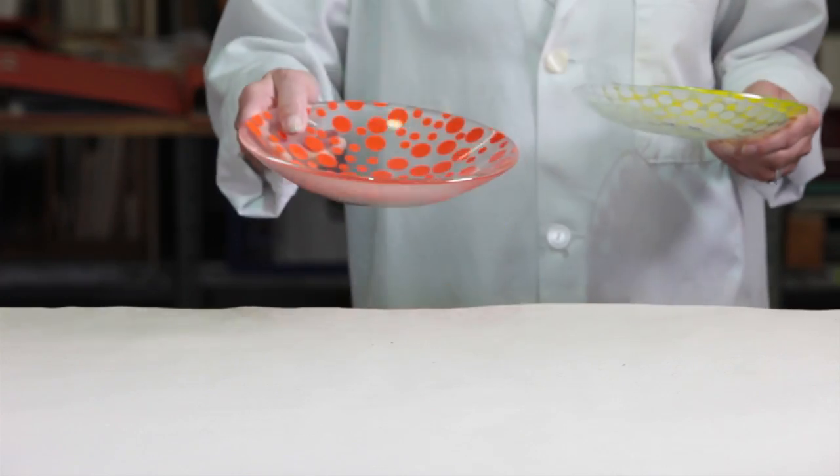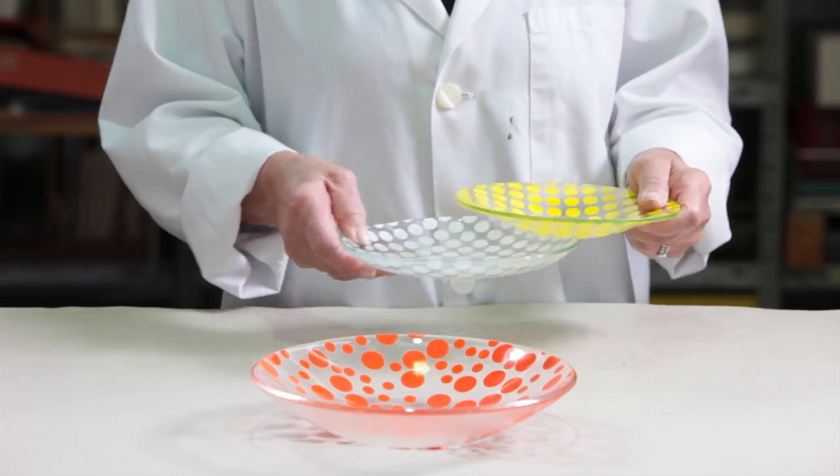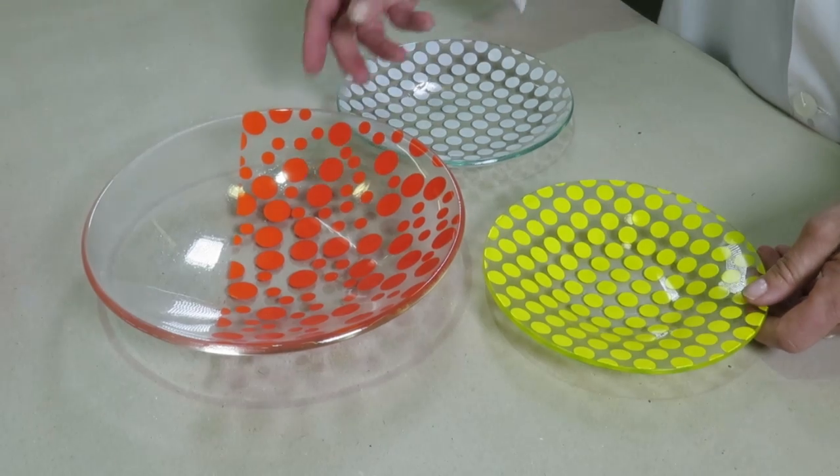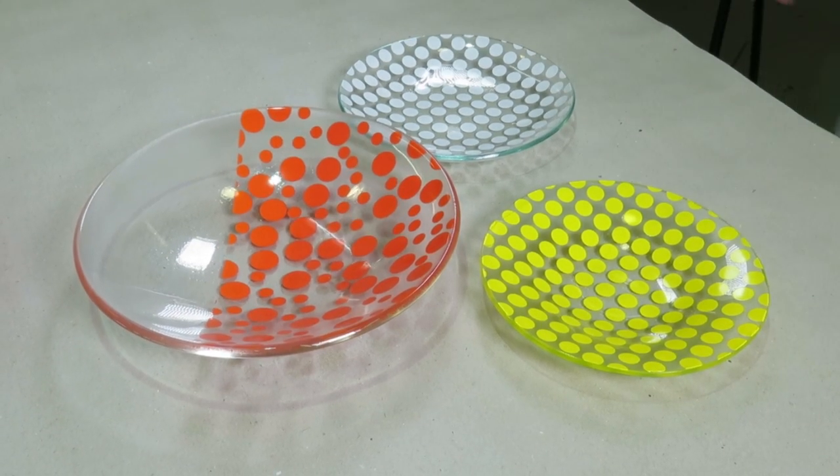As the temperature range for slumping glass is similar to the lower temperatures for colorline paste, you can achieve the slumping and the paint firing in one go.